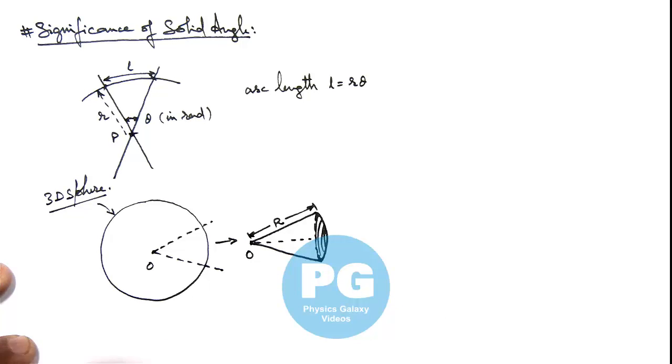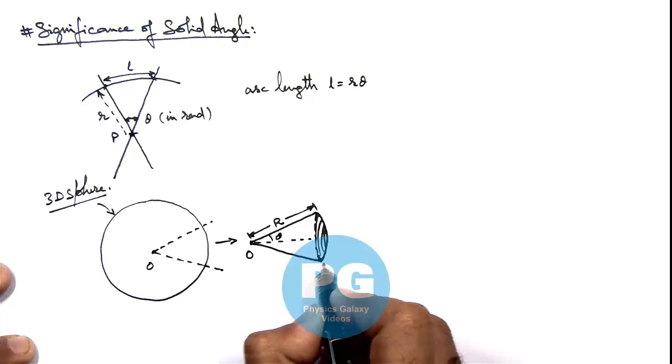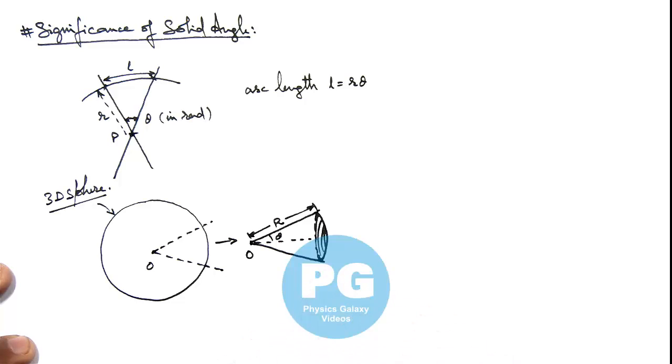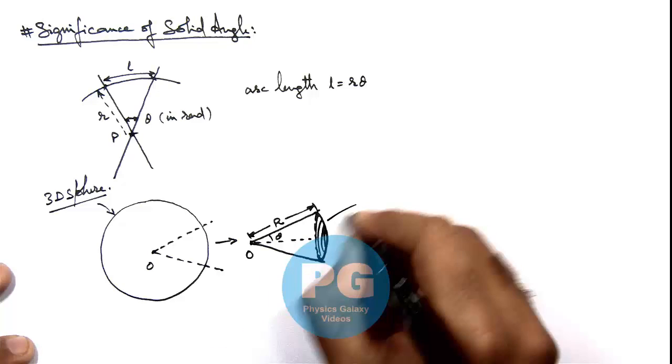And say if it is having a half angle theta, then the length of this spherical surface from one projector to the other projector of this cone, we can simply write as r multiplied by 2 theta.